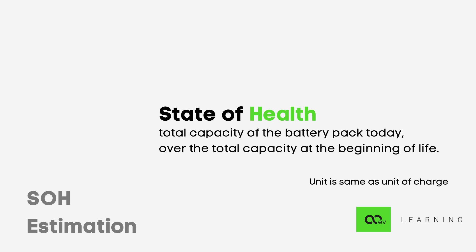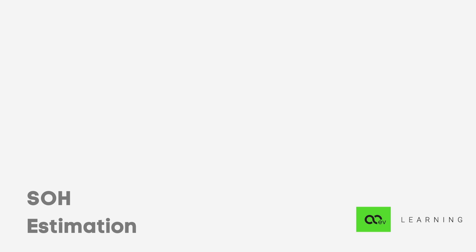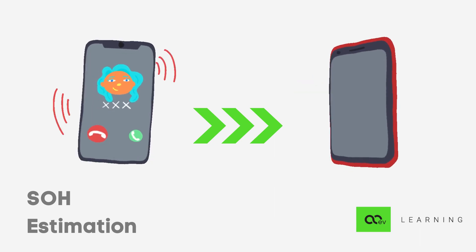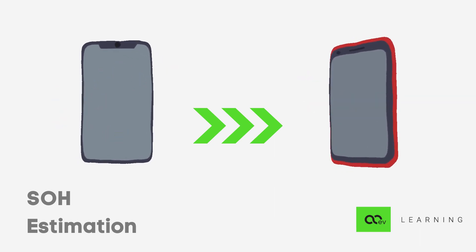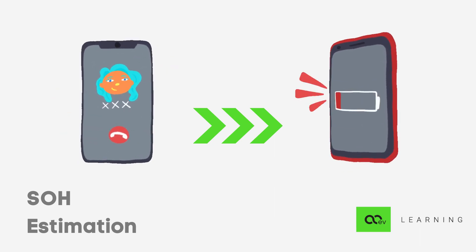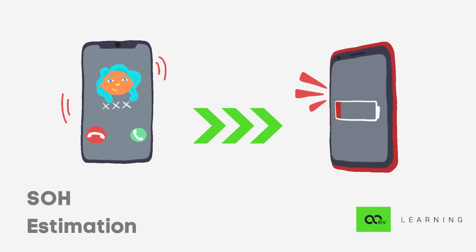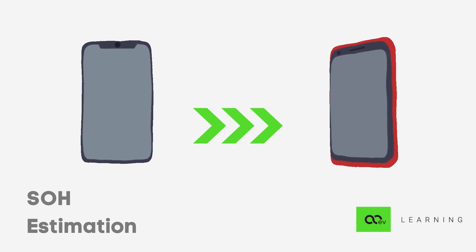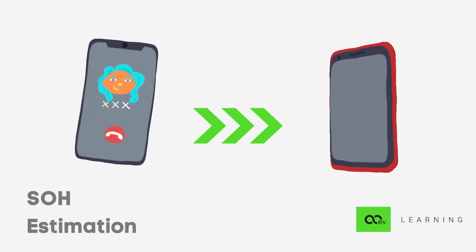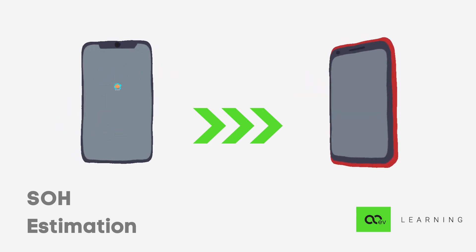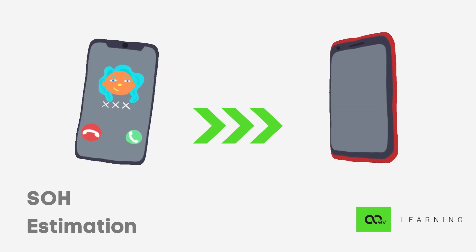The units of this are given by ampere hours, or units of charge. Just as we have seen in our previous session, SOH can be seen in our daily use of phones, which last for a day when new and later on last for only half a day after a few years. So the cell phone initially has an SOH of 100%, with total capacity basically equal to the beginning-of-life capacity.